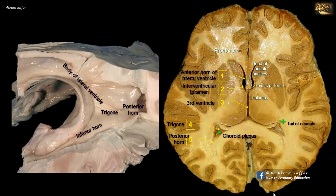The posterior horn of the lateral ventricle is shown in 5. It extends into the occipital lobe, hence it is also called the occipital horn. It is of variable length and is surrounded by white matter. Note here that the forceps major, or forceps occipitalis, the fibers of the corpus callosum, they bulge into the posterior horn of the lateral ventricle to form what is called the bulb.